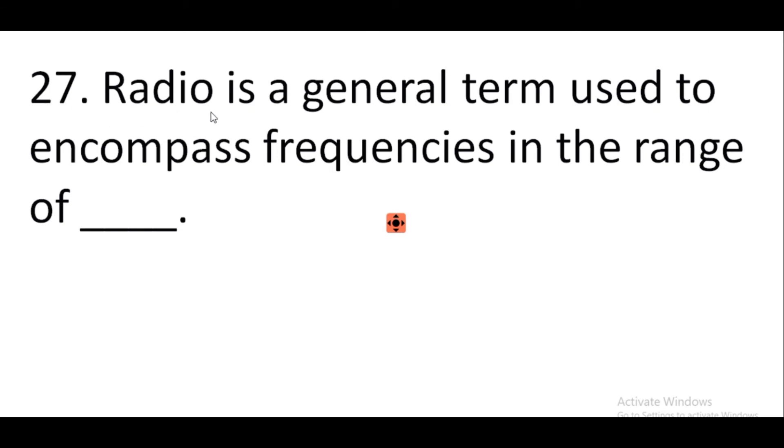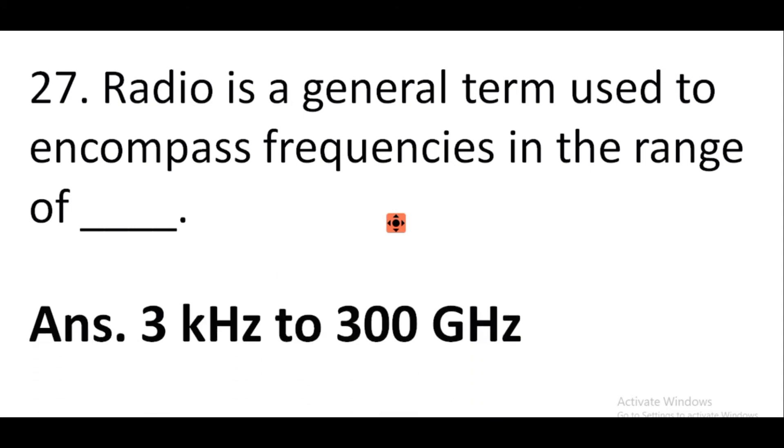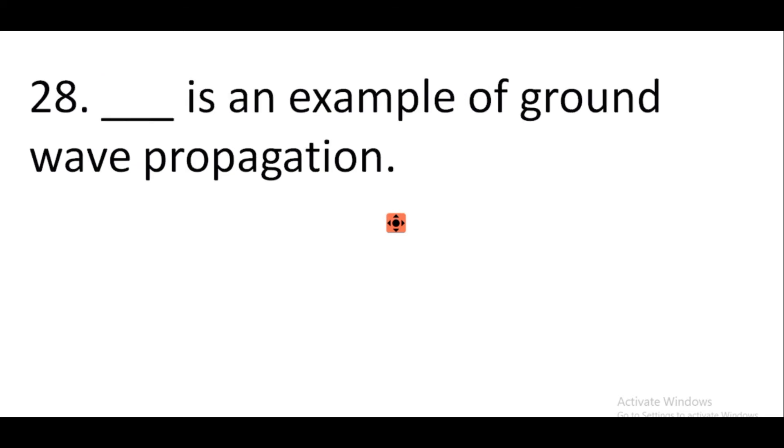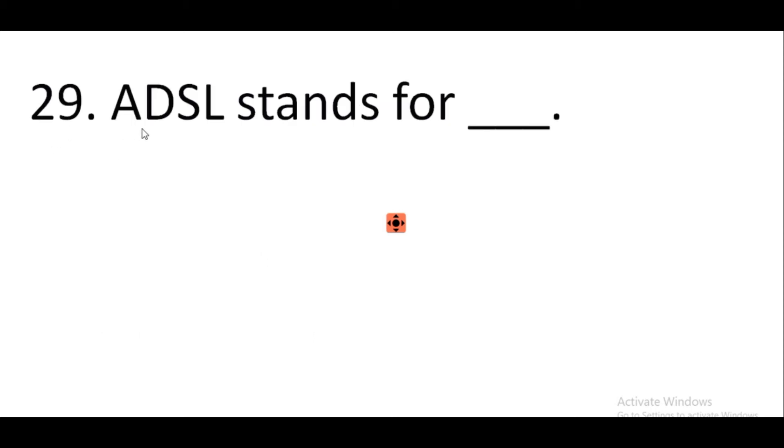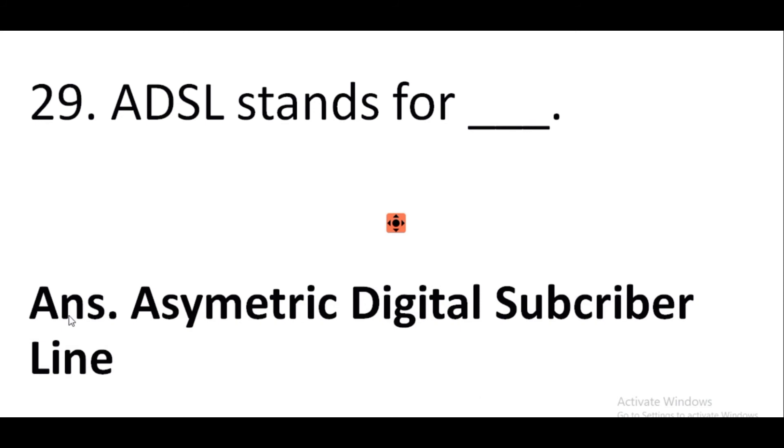Question number 27: Radio is a general term used to encompass frequencies in the range of 3 kHz to 300 GHz. Question number 28: AM radio is an example of ground wave propagation. Question number 29: ADSL stands for asymmetric digital subscriber line.